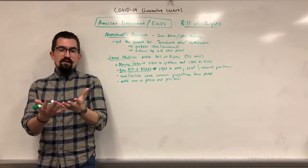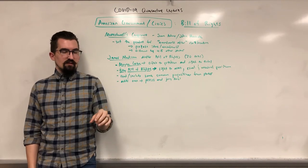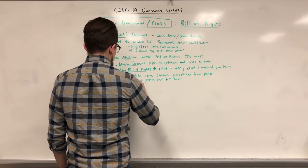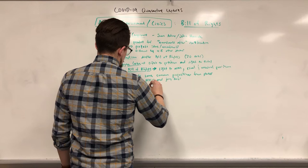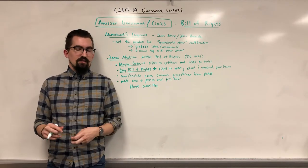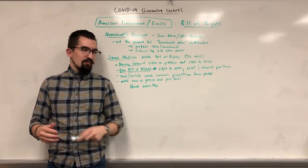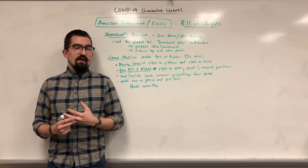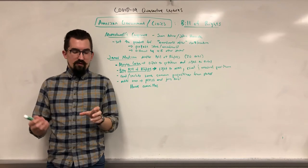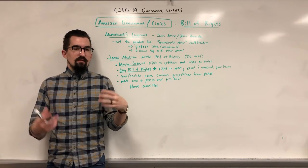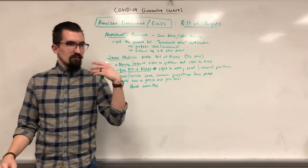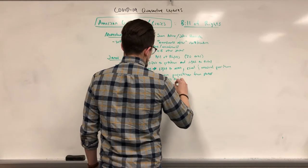Madison brought these 20 amendments and offered them up to Congress. The House and Senate each looked at them, made their changes, and then together hammered out the final version. The House of Representatives formed a committee — selected members to get together and work out exactly what details to change. House and Senate committees are common; they're established from various parties to look at issues, consult experts, and make additions or eliminations. The House committee cut the list from 20 down to 17, mostly by condensing similar items into single amendments.